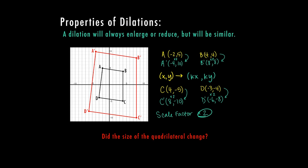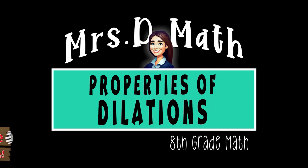So now I want to know, did the size of my quadrilateral change? And in this case, yes. If it's a dilation, your shape will always change by enlarging or reducing, but the shapes will still be similar. If we were to measure all the angles, all the angles would be equivalent or congruent. And if we measured the side lengths, they would also increase by the same scale factor of 2. So they are similar but they will always be different sizes.